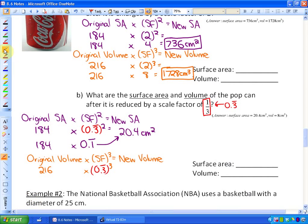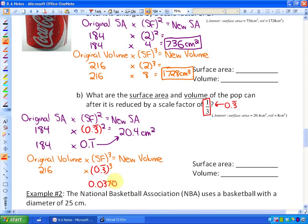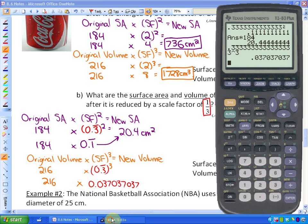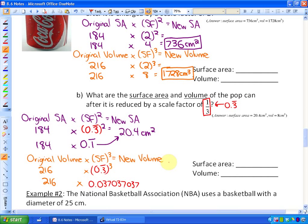So this is right here 0.037. So if I just multiply the original volume, 216, by that value, I will have the new volume. And that is 8. So the new volume is 8 cm cubed. So there are two answers.